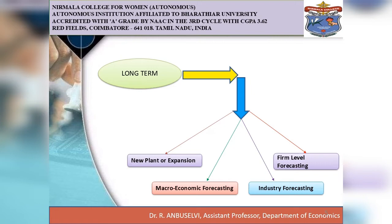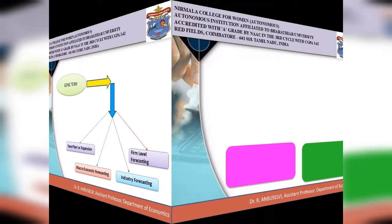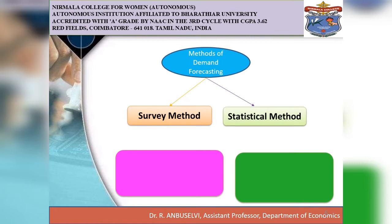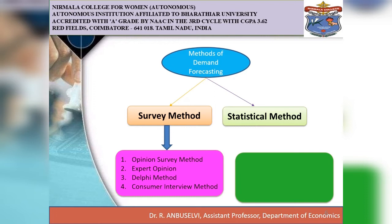Demand forecasting is done for both short-term and long-term periods. Several methods are employed for forecasting the demand in the market. All these methods are grouped under two heads: survey methods and statistical methods. Survey methods are classified according to the information from the customer point of view, and opinions of experts are collected by interview schedule. Survey methods can be divided into four types: opinion polling method, expert opinion method, Delphi method, and consumer interview method.